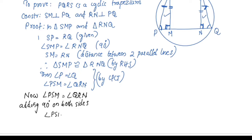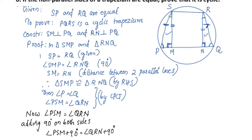Angle PSM plus 90 degrees is equal to angle QRN plus 90 degrees. Angle PSM is an angle, and this is 90 degrees. PMS is 90 degrees, this angle is 90 degrees. Between the transverse and co-interior angles, this angle is 90 degrees.